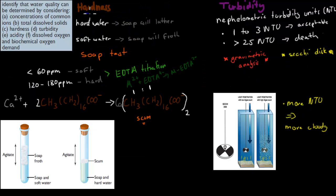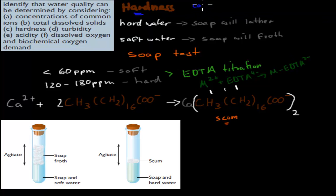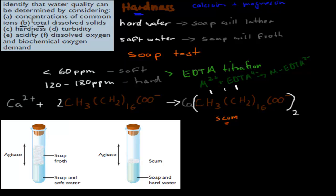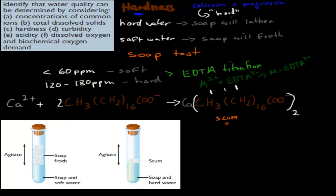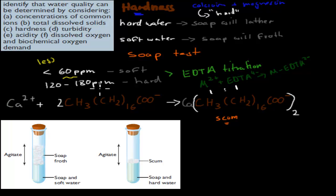Next is hardness. When we talk about hardness, we are talking about levels of calcium and magnesium inside water, because too much of either will make the water hard. Hard water often tastes different — a very strange, hard taste, not like normal drinking water. For soft water, we want less than 60 parts per million of calcium and magnesium combined. Between 120 and 180 parts per million is considered hard, which is what we are trying to avoid.